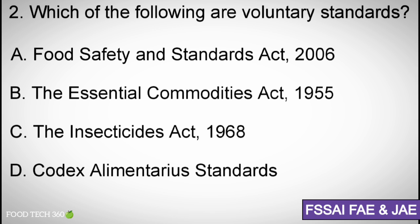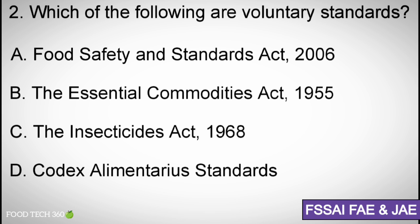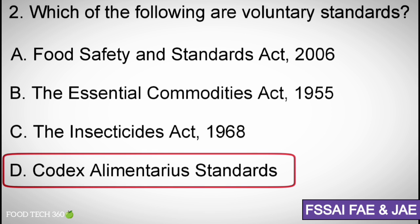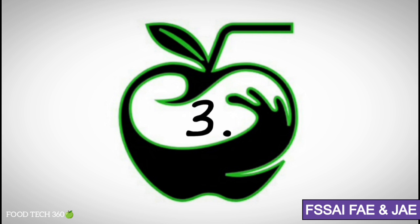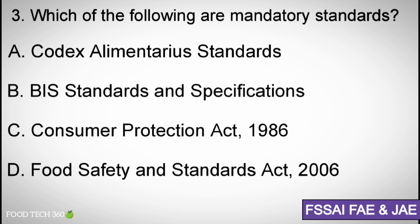Question number two: Which of the following are voluntary standards? Options: A) Food Safety and Standards Act 2006, B) The Essential Commodities Act 1955, C) The Insecticides Act 1968, D) Codex Alimentarius standards. Correct answer: D) Codex Alimentarius standards.